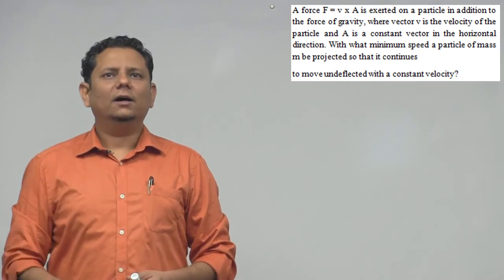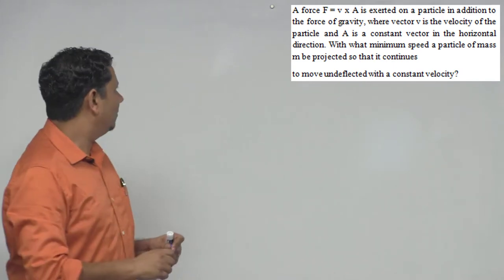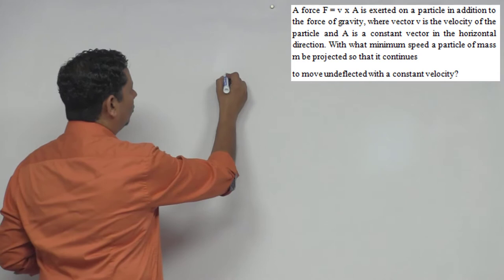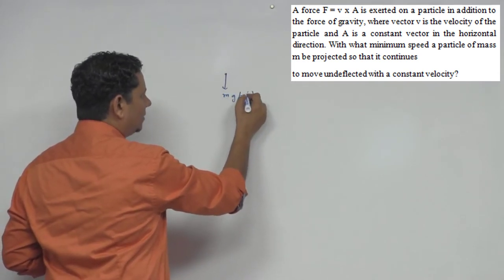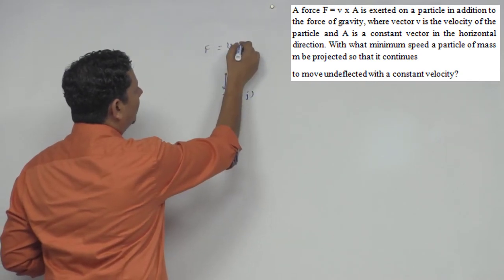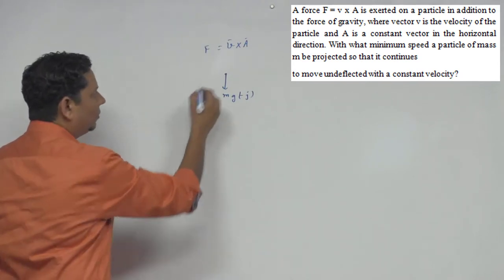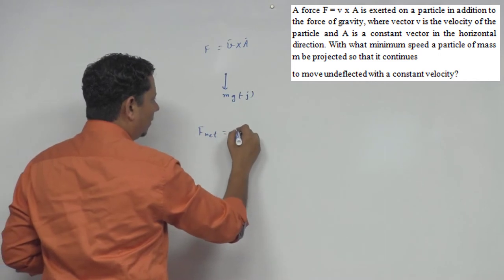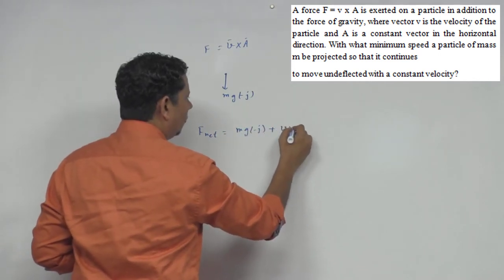Now the concept: the particle has two forces acting on it. One force is in this direction, minus J cap, and the other is V cross A. So now the net force will be F_net = mg(-J cap) + V × A.